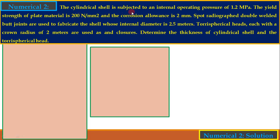Problem 2: A cylindrical shell is subjected to an internal operating pressure of 1.2 MPa (= 1.2 N/mm²). The yield strength of plate material is 200 N/mm² — since yield strength is given, this is a ductile material. Corrosion allowance CA = 2 mm. It is fabricated using a double-welded butt joint with radiography. Internal diameter di = 2.5 m = 2500 mm.